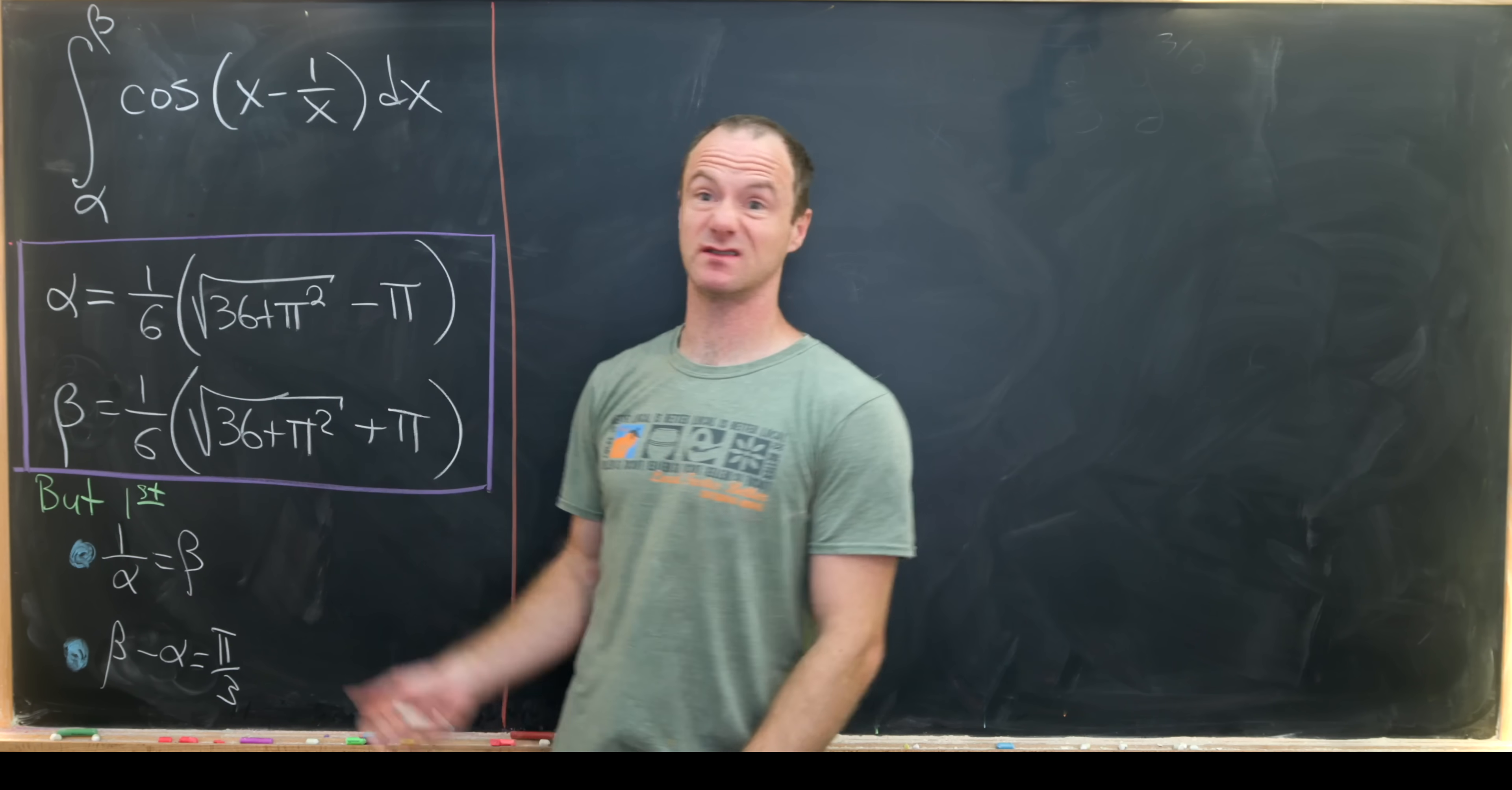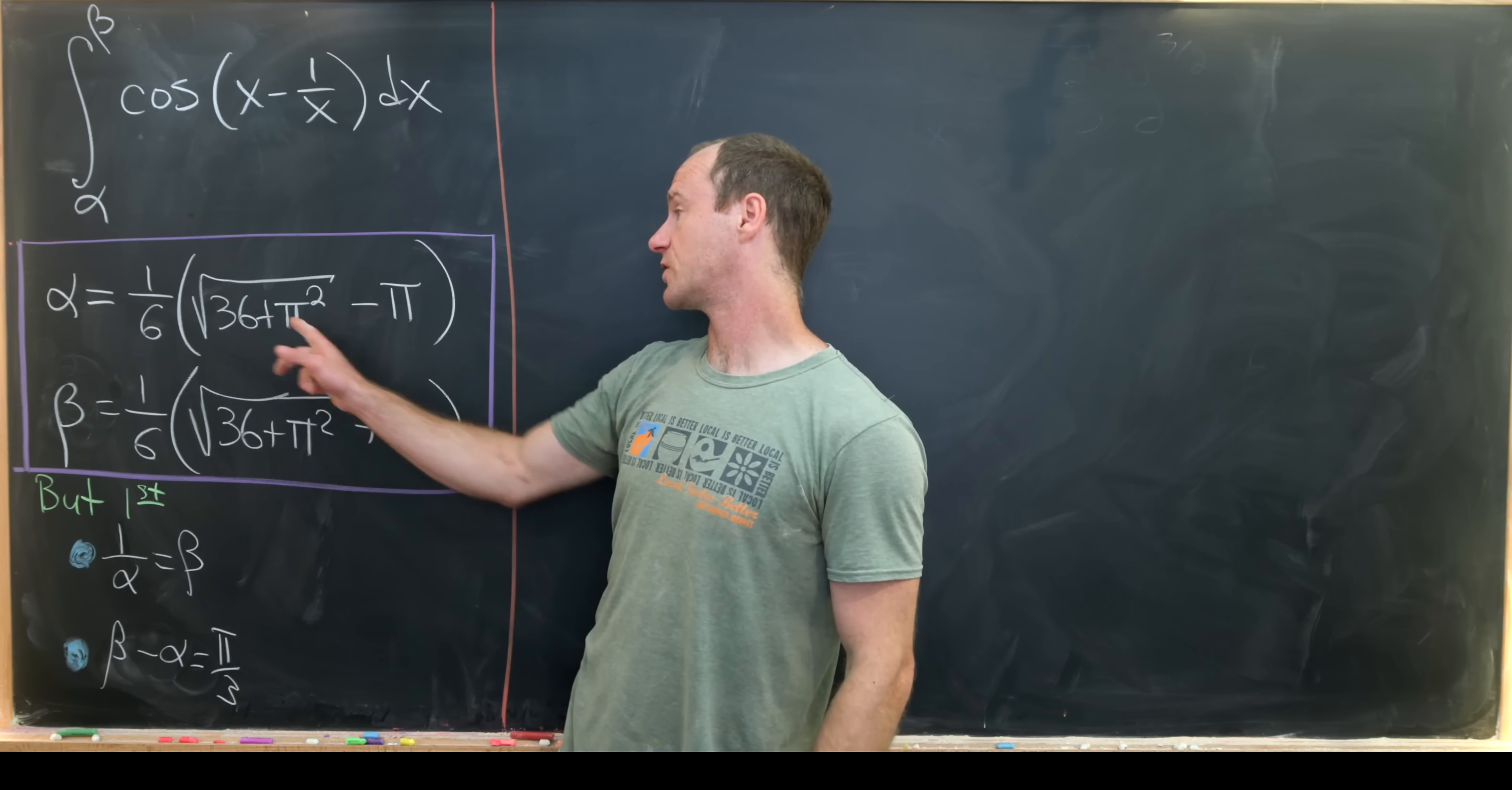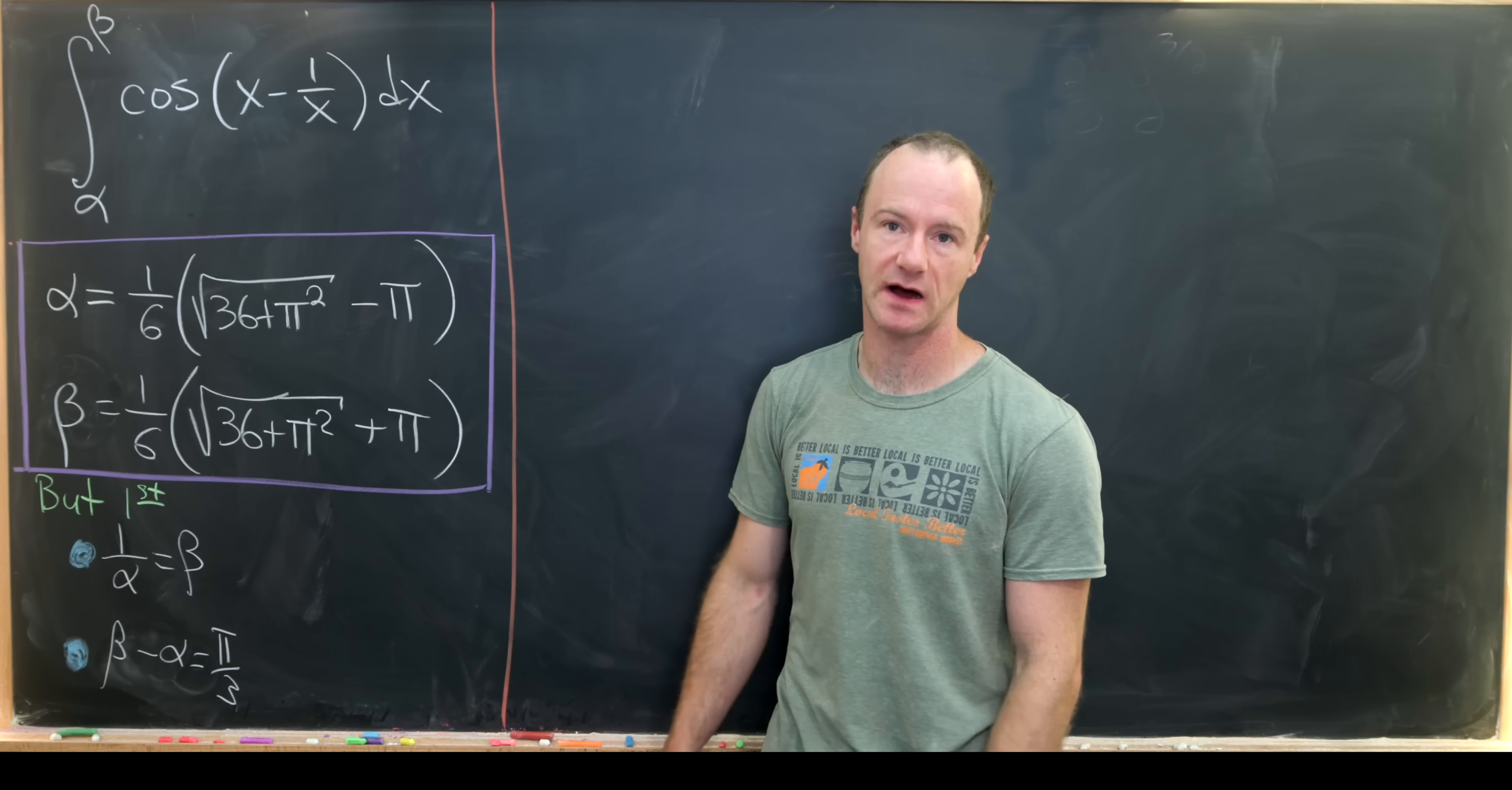So this function is a little bit complicated itself but the really interesting thing here is that the bounds of integration are also fairly complicated. Alpha is defined to be 1 over 6 times the square root of 36 plus pi squared minus pi, and then beta is kind of complementary to that. It's 1 over 6 times the square root of 36 plus pi squared plus pi.